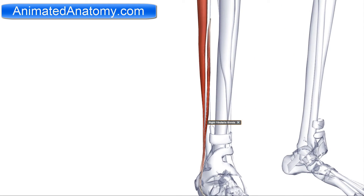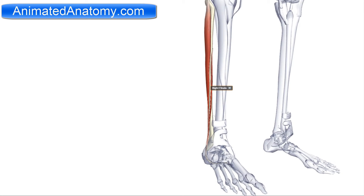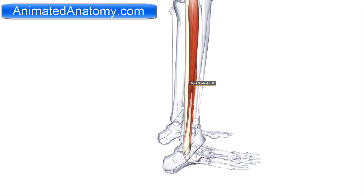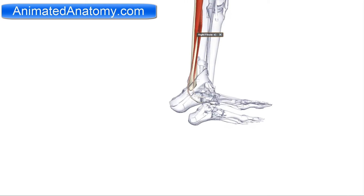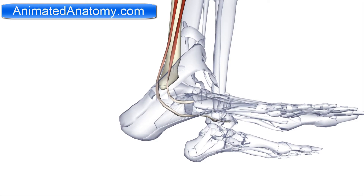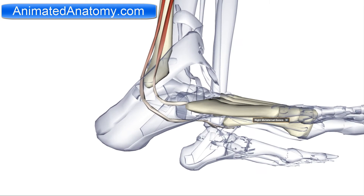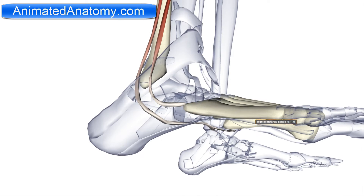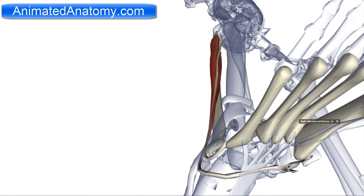If we look at it from here, they both originate from the fibula. However, their insertion is slightly different. Fibularis brevis inserts on the fifth metatarsal bone. However, the fibularis longus also passes here to the fifth metatarsal bone, but it also goes all the way here to the medial cuneiform bone.